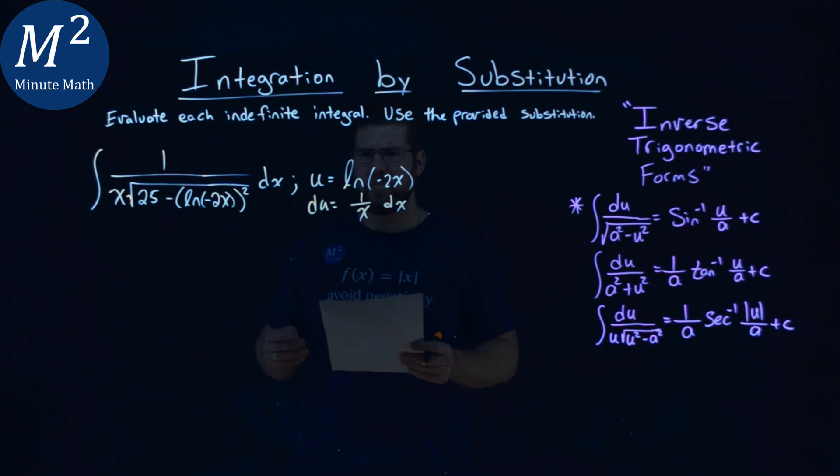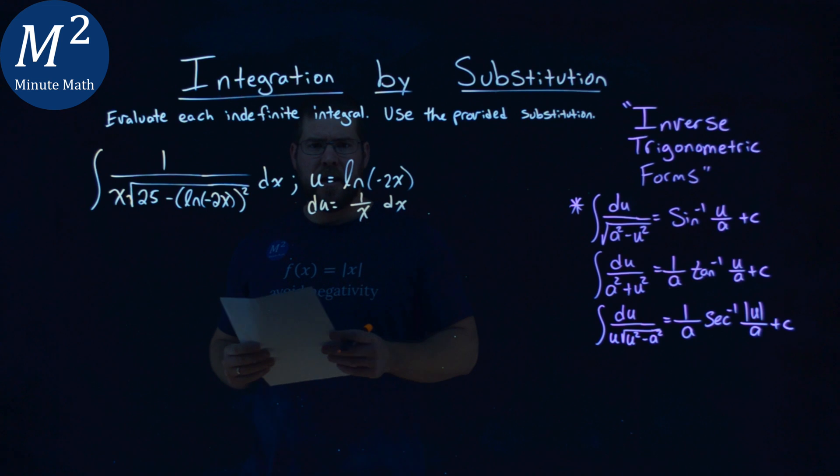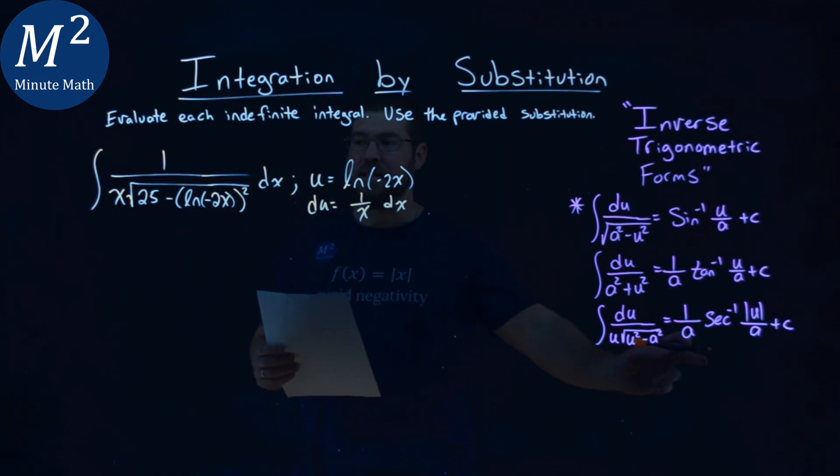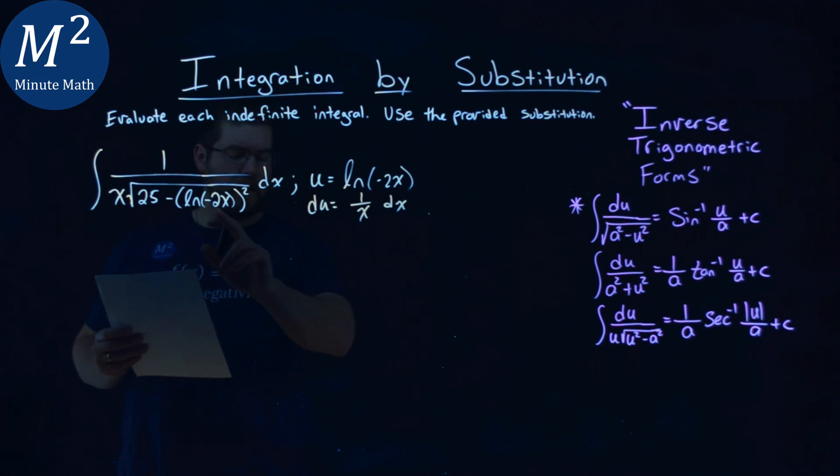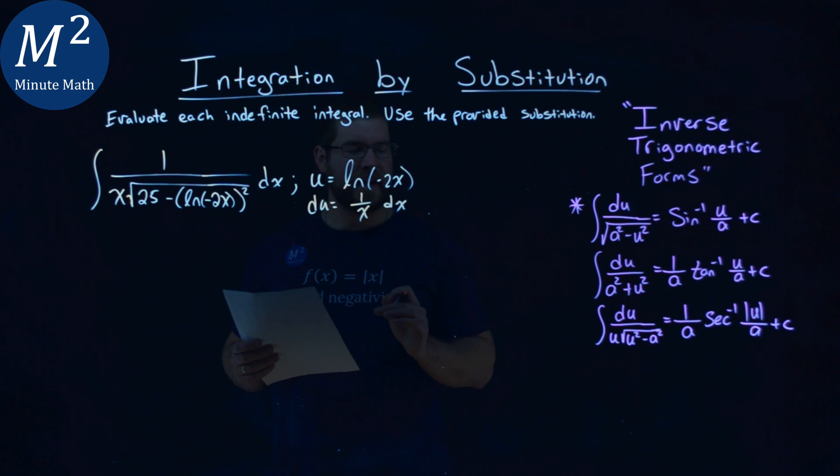So we have a u value, we have a du value, we want to find an a value as well. Now, notice here, our u value kind of lines up perfectly with our execant, right? Our u value, actually, is it our execant? Nope, I don't know why I said that myself. It's actually the sine. You'll see why in a second.